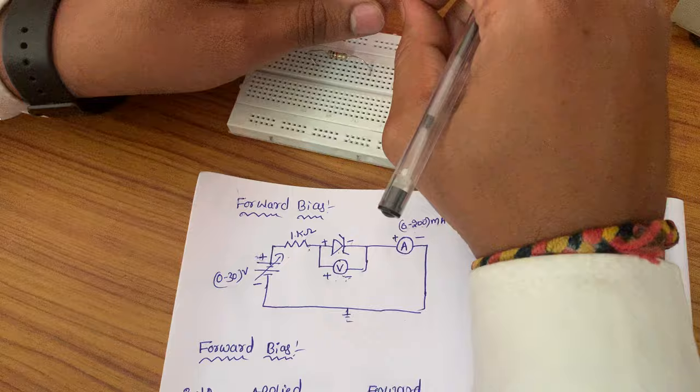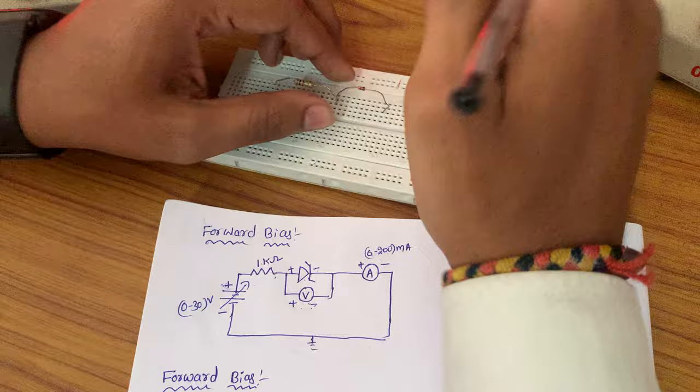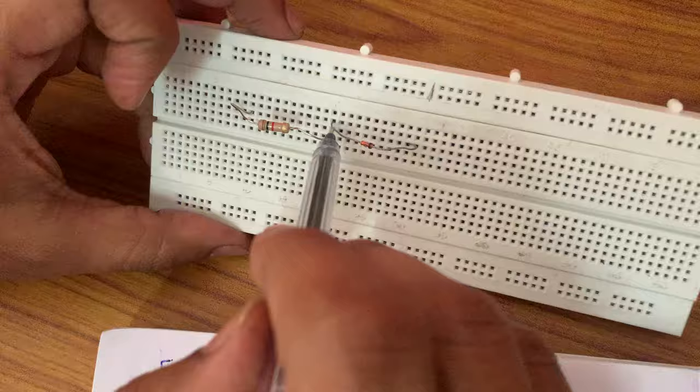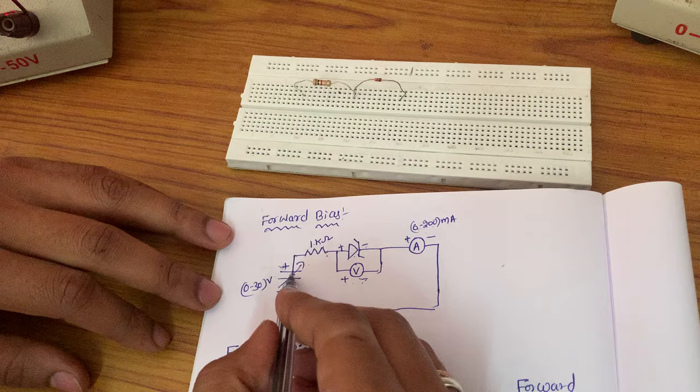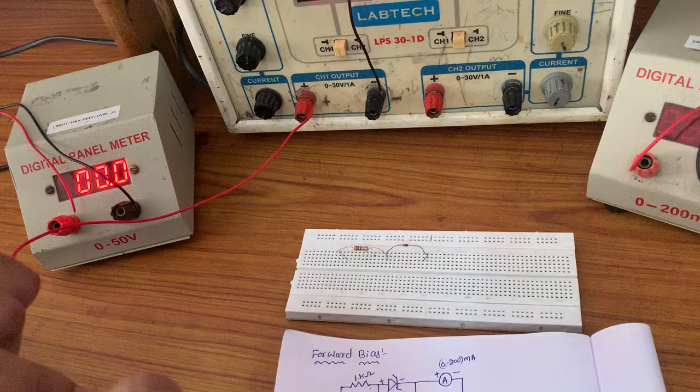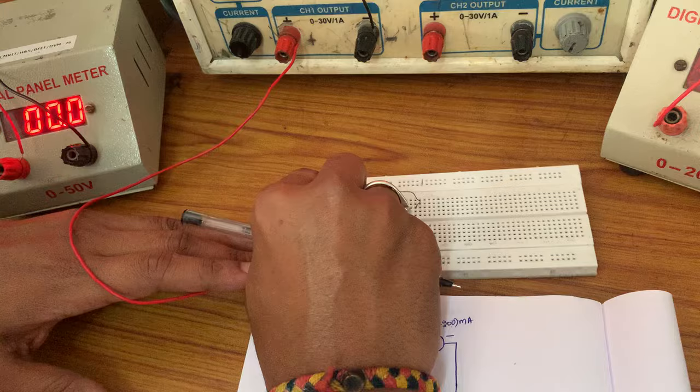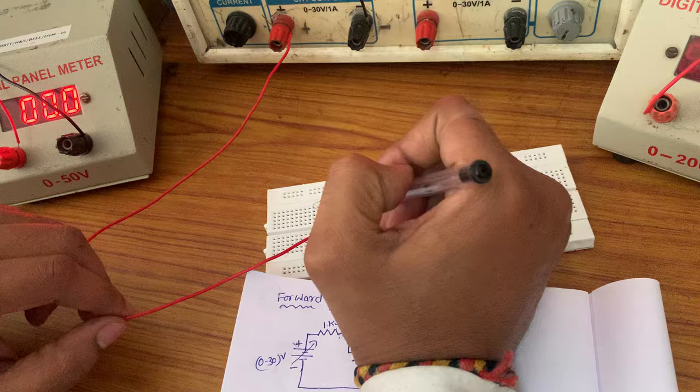Connecting means we should connect vertically here. These both terminals are connected, so I am connecting vertically. Now, comparing the remaining circuit, the RPS positive is connected to the 1 kilo ohm first terminal, and we should connect vertically.